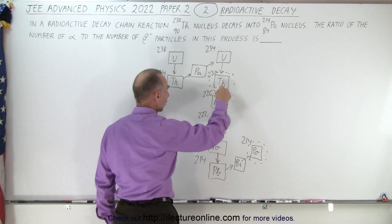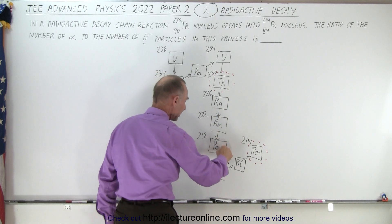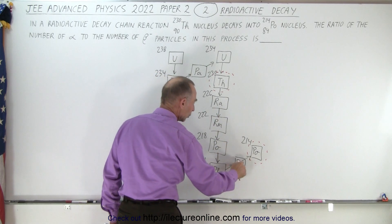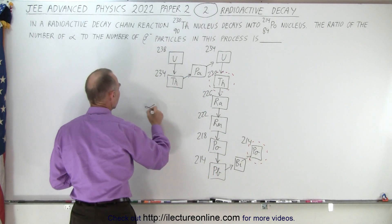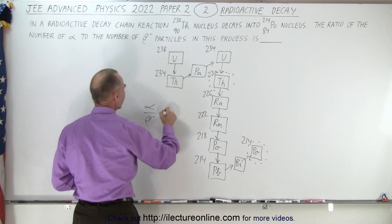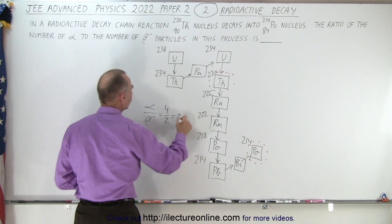And notice that we had one, two, three, four alpha decays, and one, two beta decays, so the ratio then would be alpha to beta is 4 to 2, which is equal to 2, that ratio.